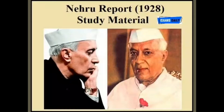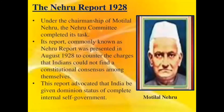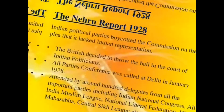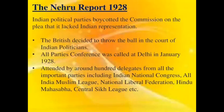Nehru Report: Birkenhead, Secretary of State for India, criticized that the Indian leaders cannot draft a unanimously accepted constitution. This challenge was accepted and an all-party committee was formed. Pandit Motilal Nehru was the chairman of this committee. To establish self-government in India, implement adult franchise system, and linguistic division of provinces — such proposals were put up in this report. This report was known as the Nehru Report. By the end of 1929, an indication was given that if the Nehru Report is not accepted by the government, then the civil disobedience movement will be started.